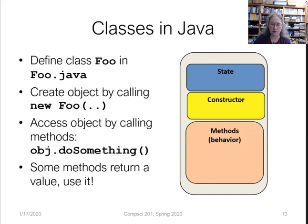Here's the structure of a class. Every class would have state, a constructor, and methods which are behavior. For the state, those are variables that define the characteristics and save the values. The constructor is for creating a new object of the class. Behavior refers to things you can do to the object.